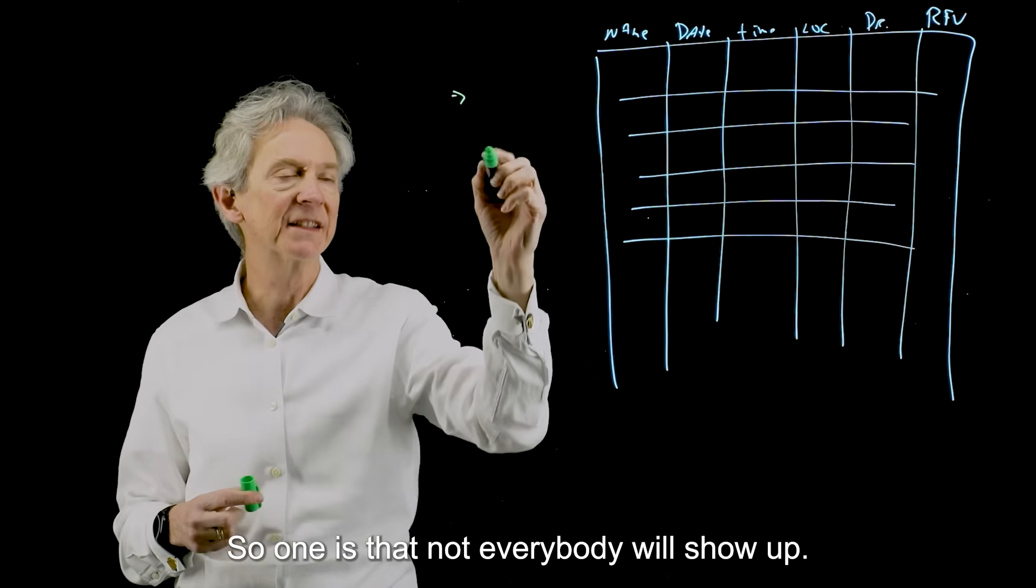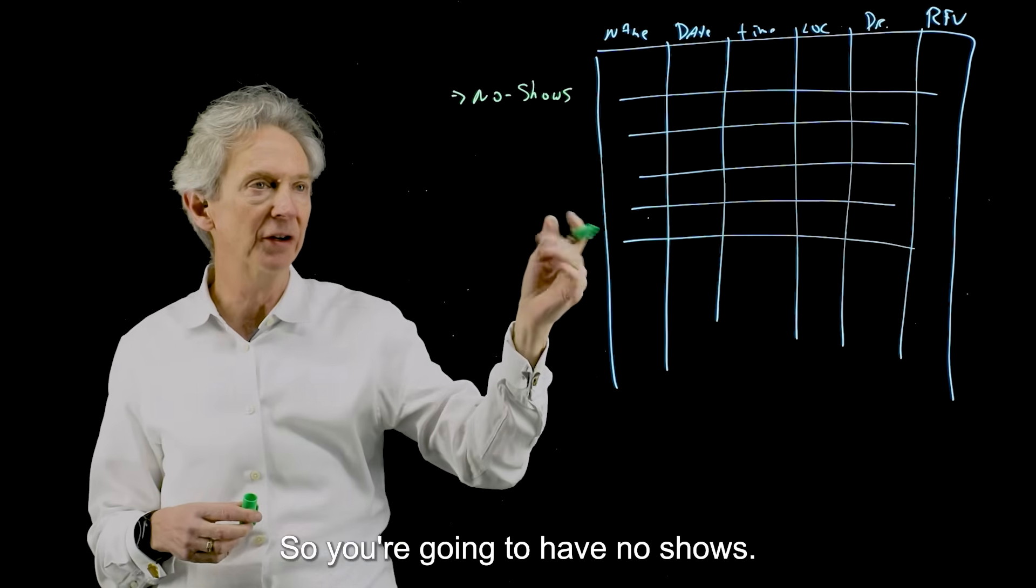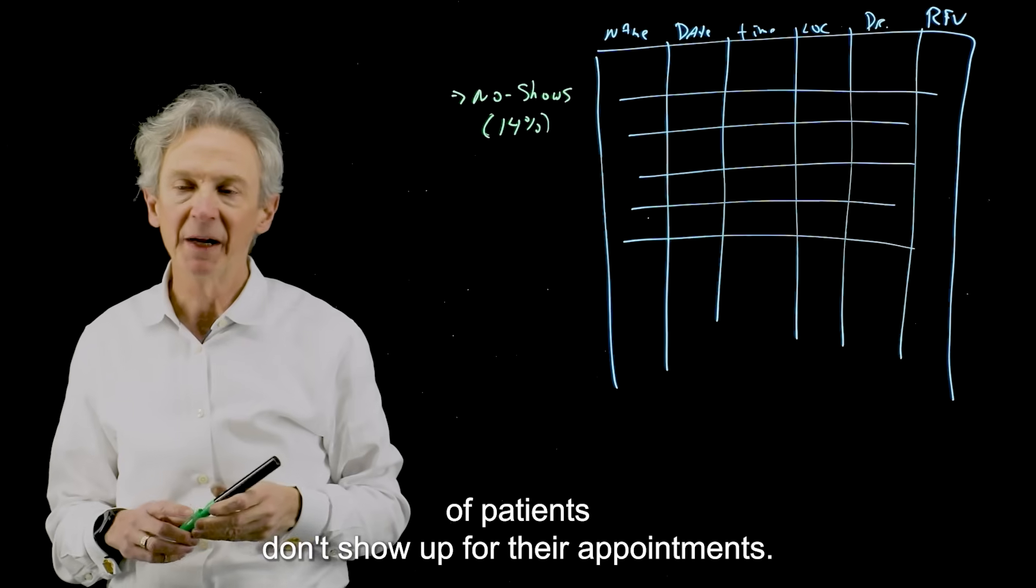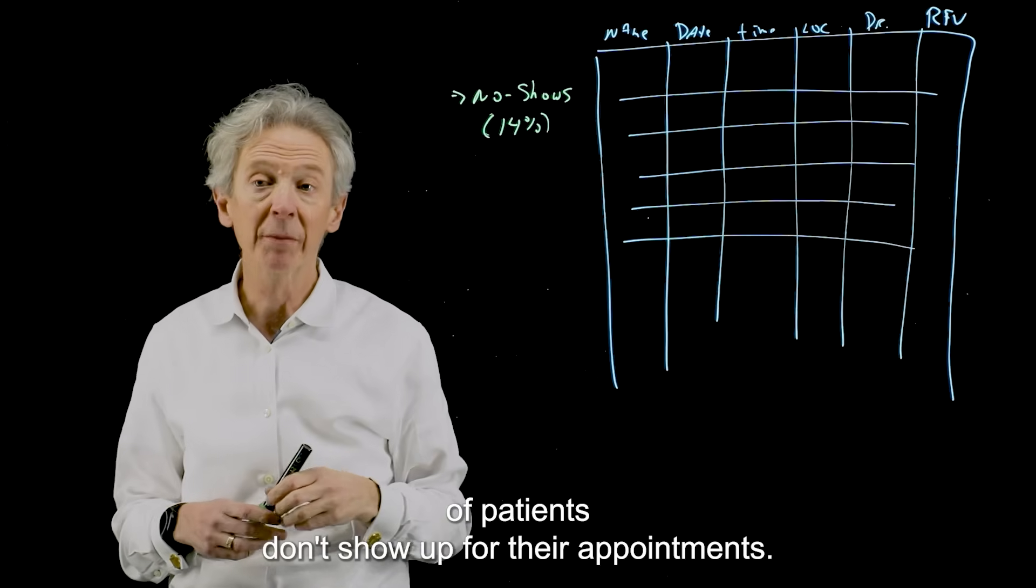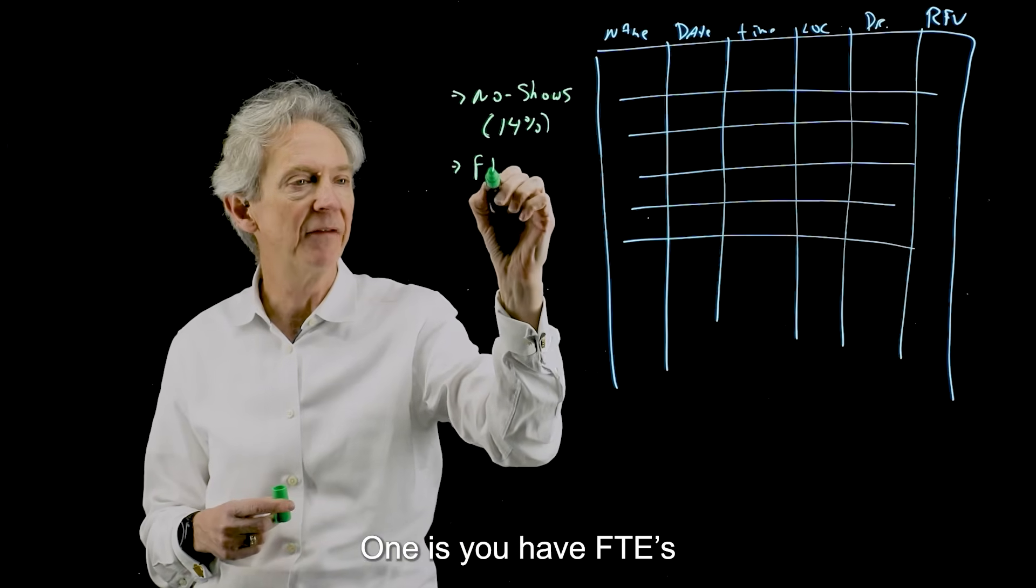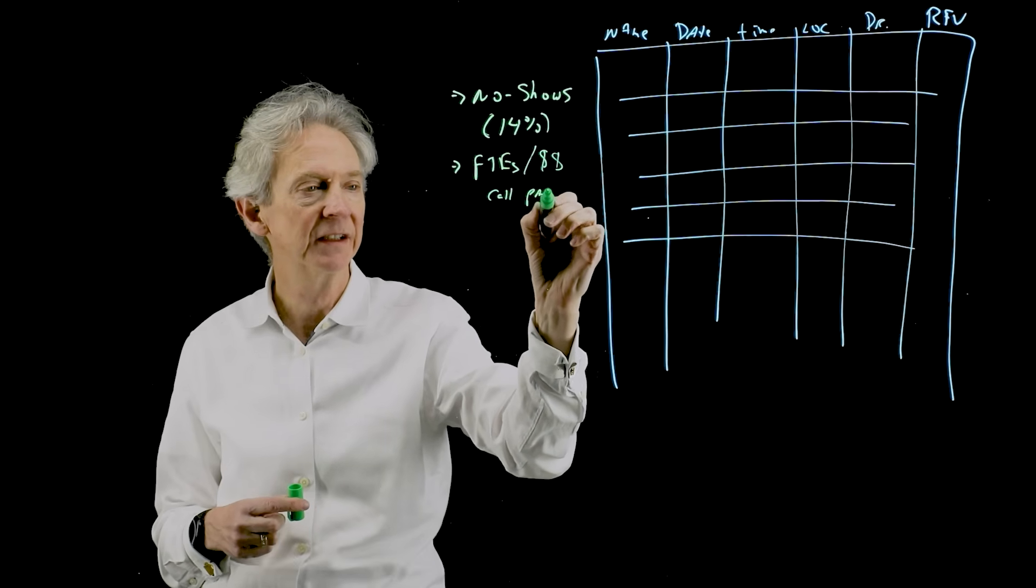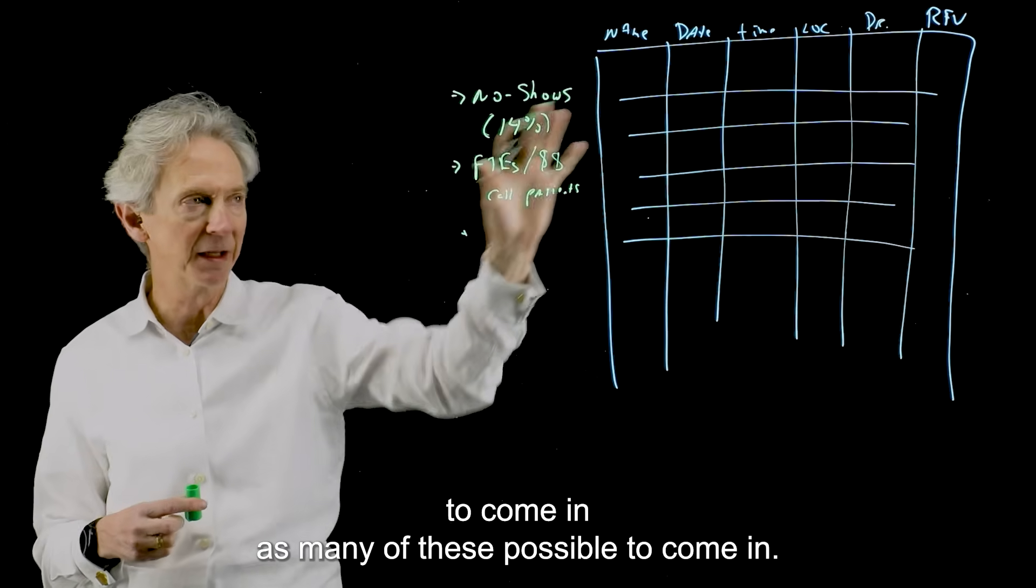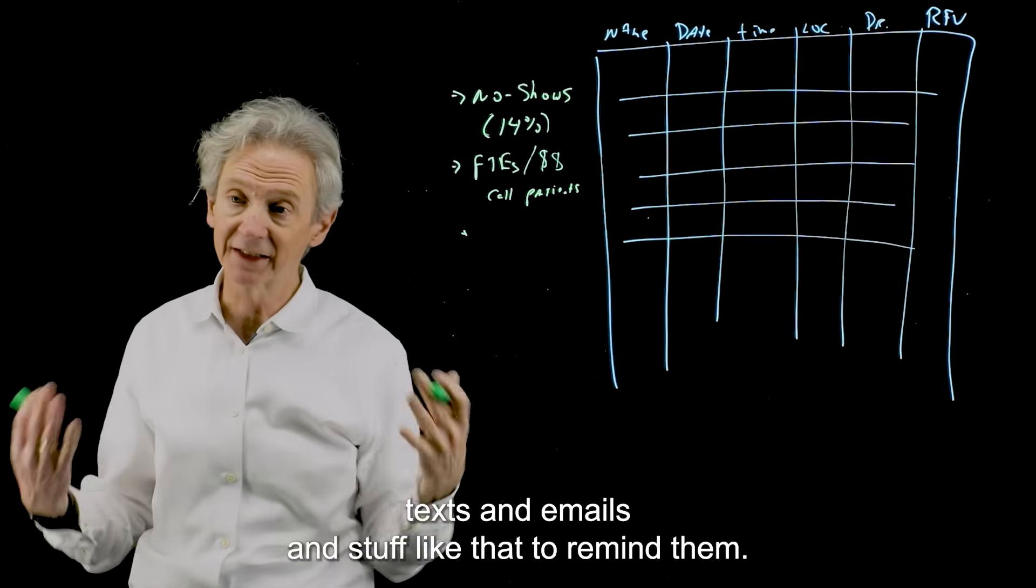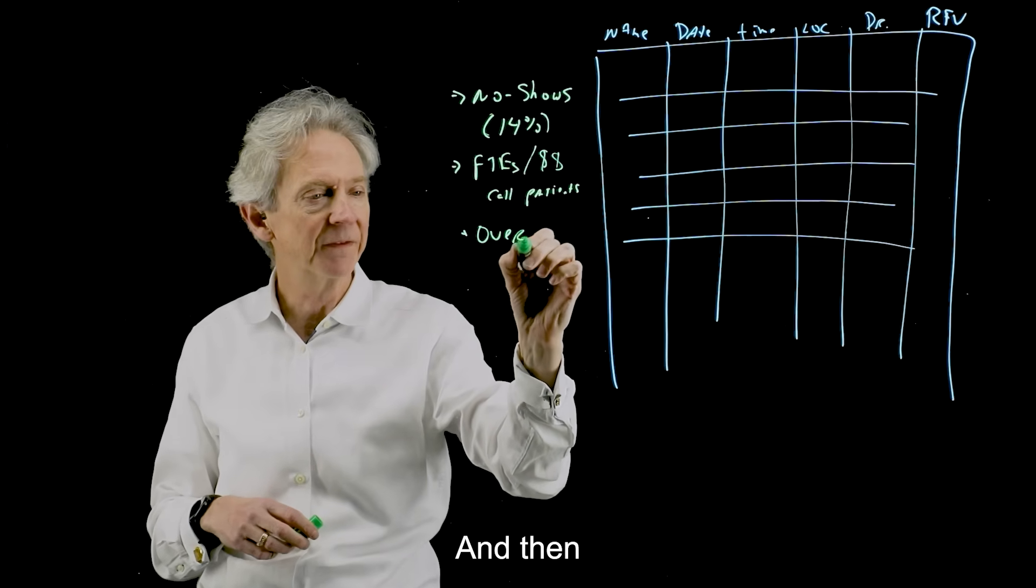One is that not everybody will show up. So you're going to have no-shows. And the rate that I see quoted most often is that 14% of patients don't show up for their appointments. So that's your no-show rate. And then you do a couple things about that. One is you have FTEs or technology systems that call patients. So you try your best to get these patients to come in, as many of these possible to come in. So you have a number of people that are calling and sending texts and emails and stuff like that to remind them. And then you're still going to have no-shows.